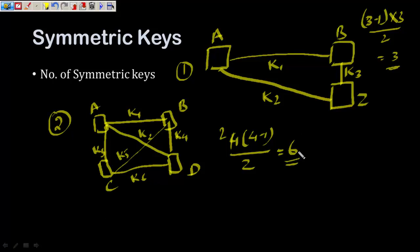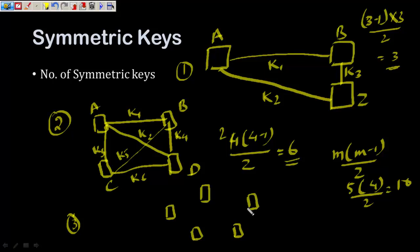Therefore, there is a general formula that if there are m people, then m into m minus one divided by two will give you the number of keys. Let us see if it is true for five. So if m equals to five, the result should come out to be five cross four upon two, that is equals to ten. So this is my third scenario: there are five people A, B, C, D, E. One, two, three, four, five, six, seven, eight, nine, ten. Ten keys are required, and now everybody is connected to every other person.